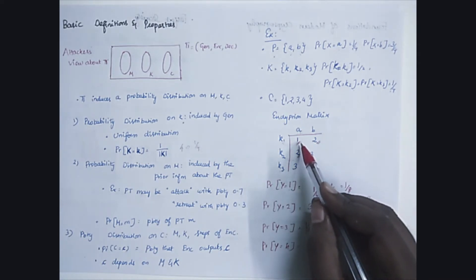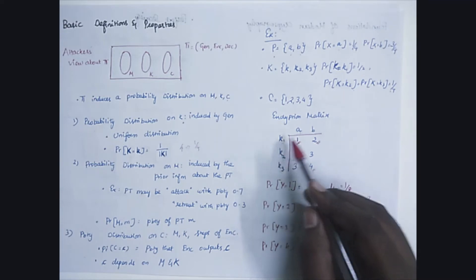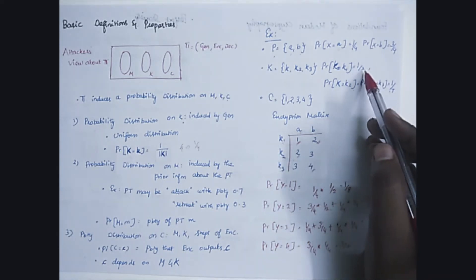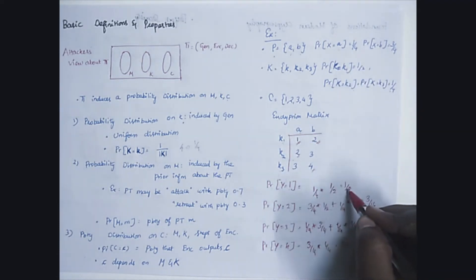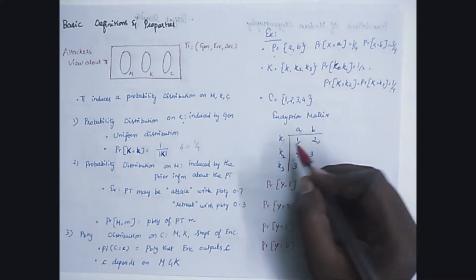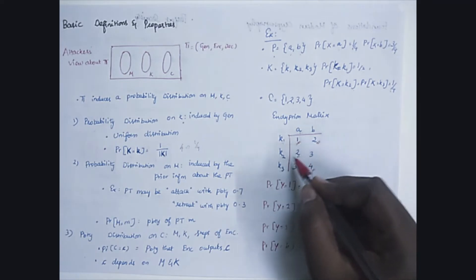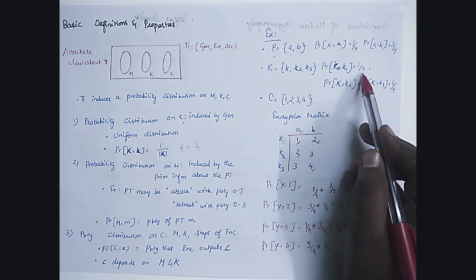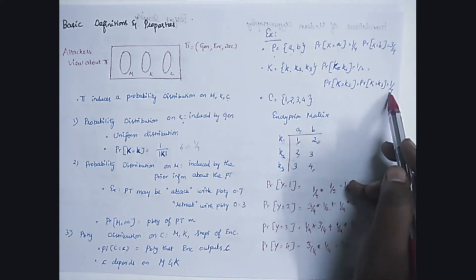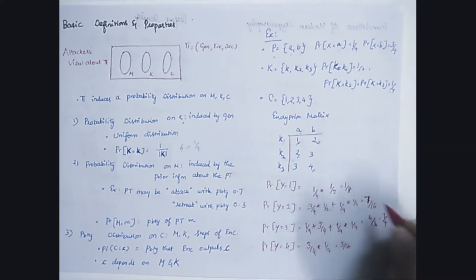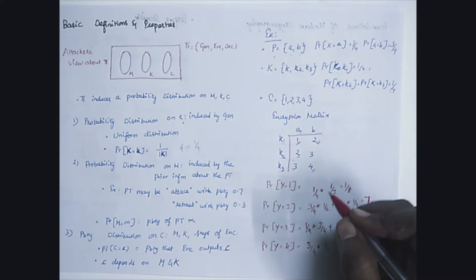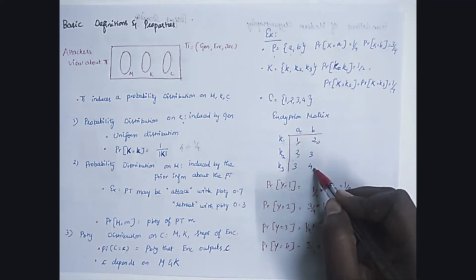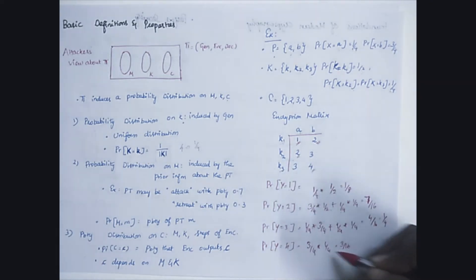We calculate the probability of each output. We get output 1 when key value is K1 and plain text is A, so probability = 1/2 × 1/4 = 1/8. For output 2 we have two combinations, K1B and K2A: (1/2 × 3/4) + (1/4 × 1/4) = 7/16. For output 3 we have two combinations K2B and K3A, giving 1/4. For output 4, only one combination K3B: 3/4 × 1/4 = 3/16.